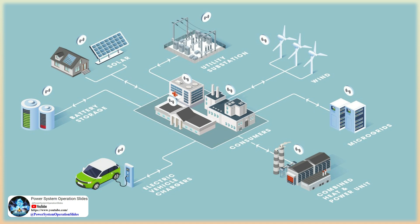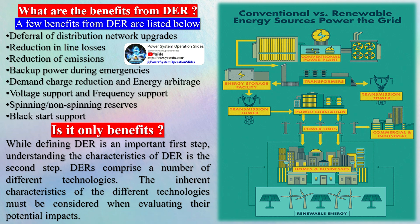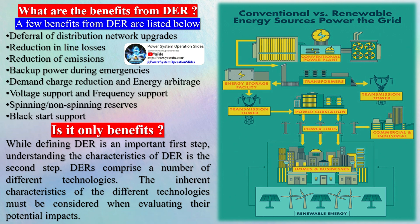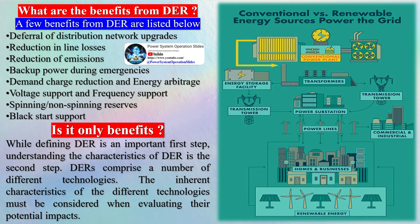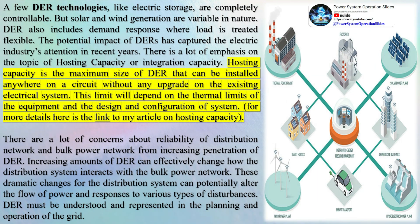While defining DER is an important first step, understanding the characteristics of DER is the second step. DERs comprise a number of different technologies, and the inherent characteristics of the different technologies must be considered when evaluating their potential impacts. Some DER technologies, like electric storage, are completely controllable, but solar and wind generation are variable in nature. DER also includes demand response, where load is treated as flexible. The potential impact of DERs has captured the electric industry's attention, with much emphasis on the topic of hosting capacity or integration capacity. DER modeling is important from the perspective of both the distribution system and the bulk power system.